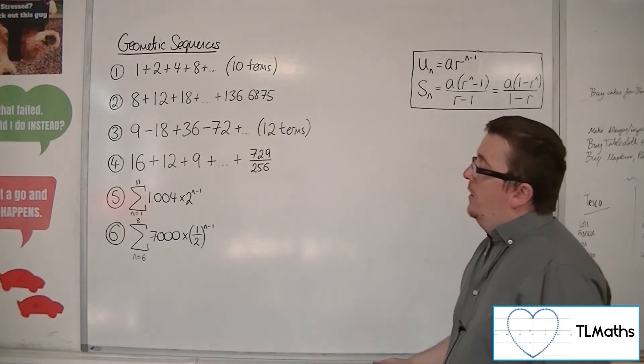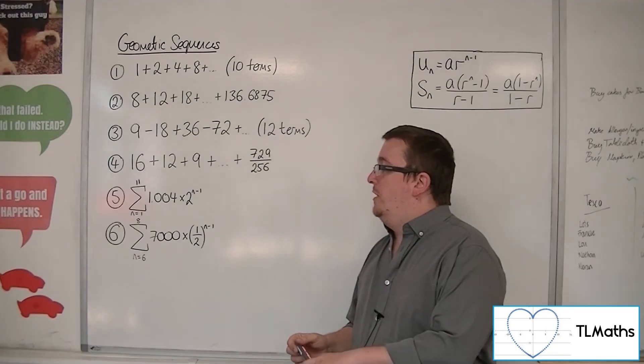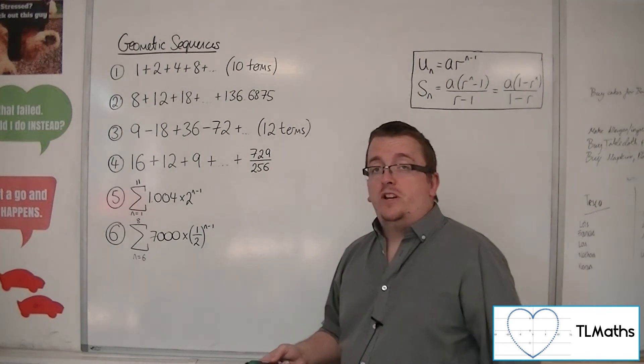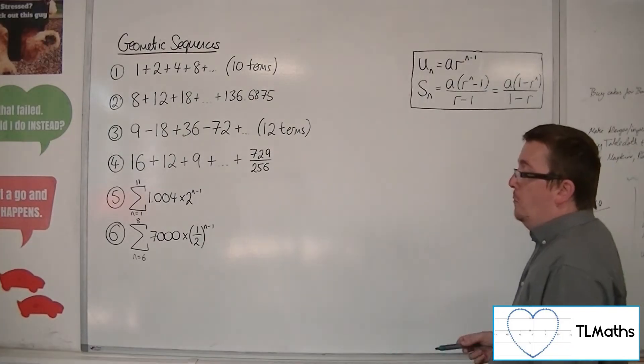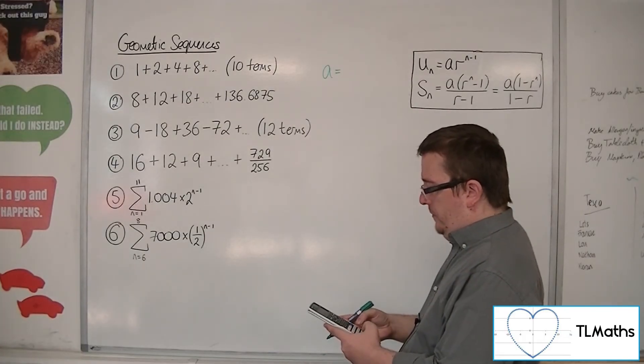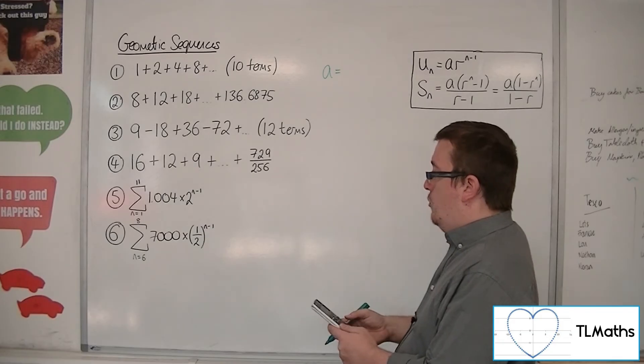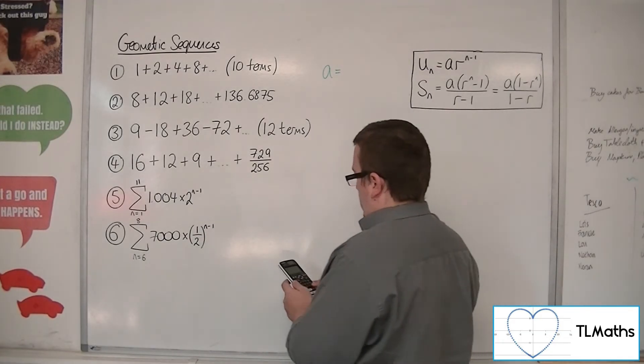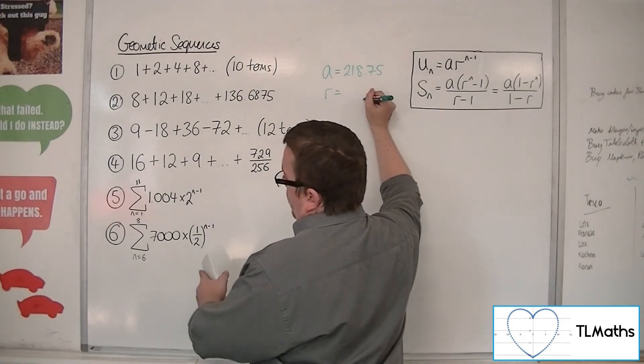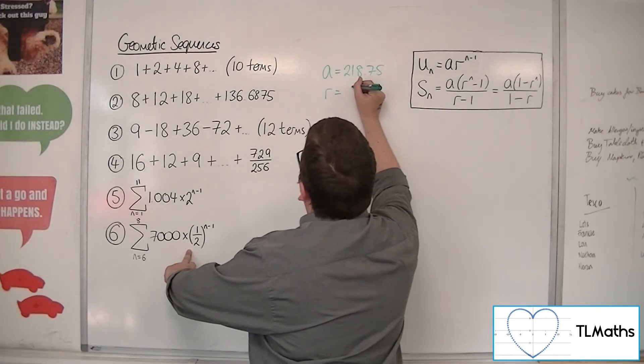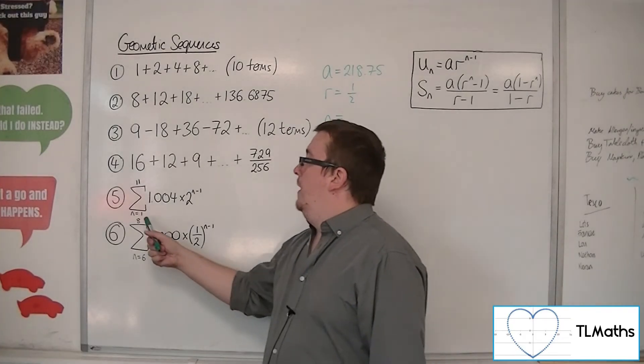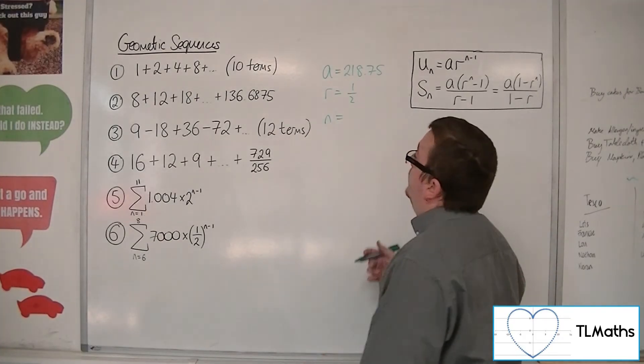And then finally, number 6. We've got 7,000 times 1 half to the n minus 1, from n is 6 up to 8. So we could figure out each term individually and add them together. I'm still going to use the formula, though. So first term is when n is 6. So we have 7,000 times by 1 half to the power of 6 take away 1, so 5. And that gets me 218.75. The common ratio R is clearly in the form of AR to the n minus 1, so R is 1 half. Now the number of terms that we have, we've got 6, 7, and 8. So 8, take away 6, then add the 1. Gives us 3 terms.